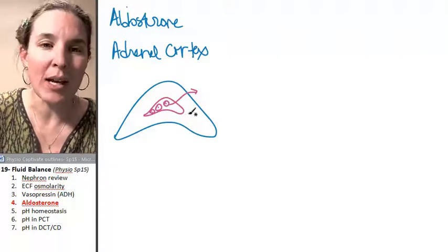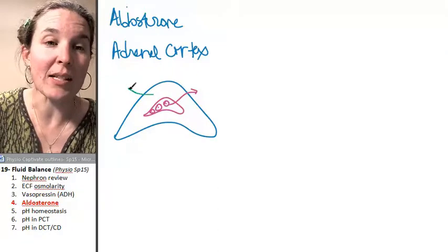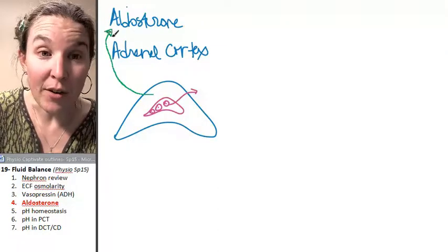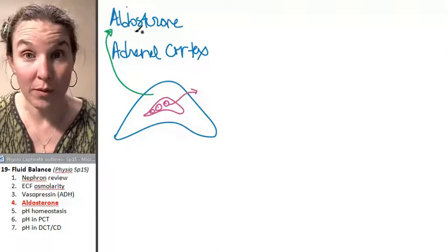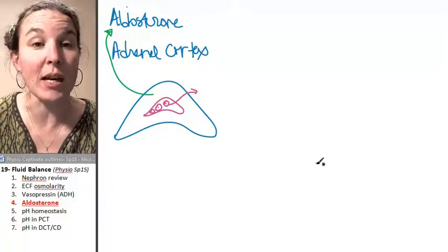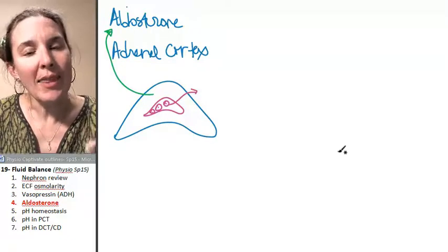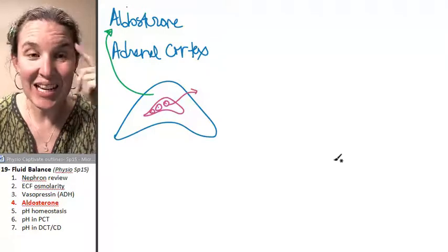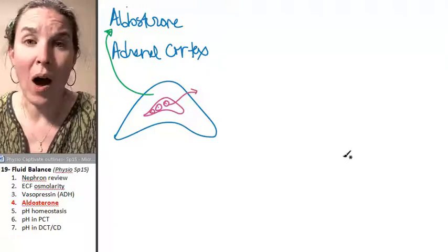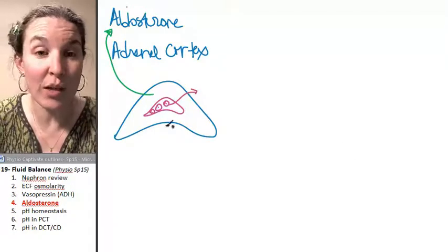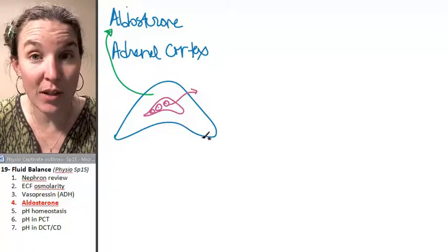Well, aldosterone is going to be produced in the cortex. There are other hormones, steroid hormones, that are produced in the adrenal cortex. I think it's relevant to take a second and go, why? Who tells the adrenal cortex to produce aldosterone?